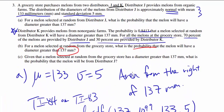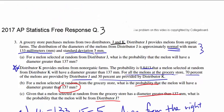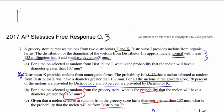Now let's look at part C. Given that a melon selected at random from the grocery store has a diameter greater than 137, what is the probability that it's gonna be from distributor J?